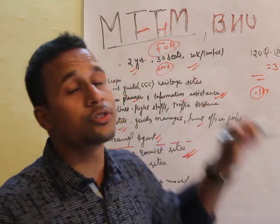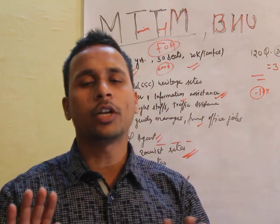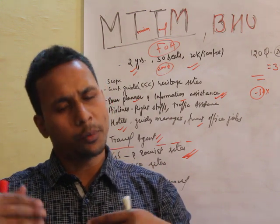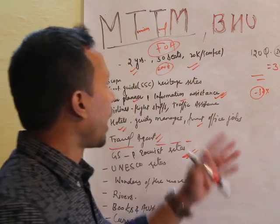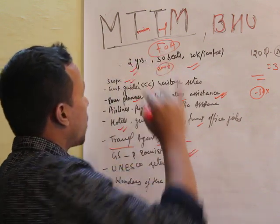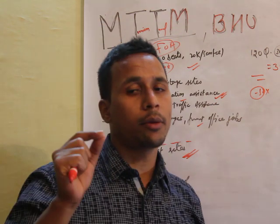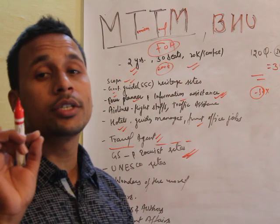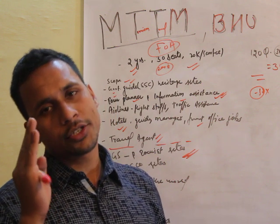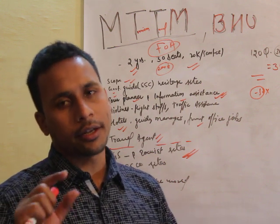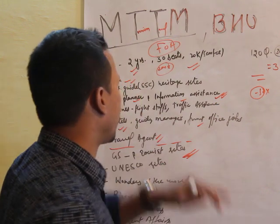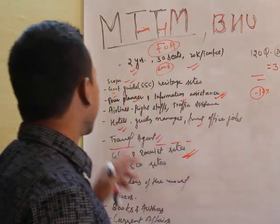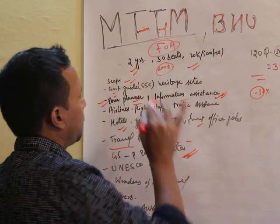If you hold the degree of Master in Tourism and Tribal Management, you don't have to sit idle. You can earn a very handsome salary per month or per year. The scopes are very vast. You can become a tourist guide — the Staff Selection Commission (SSC) conducts a test through which you can become a government guide at heritage sites spread all over the country. The second scope is you can become a tourist planner or information assistant.